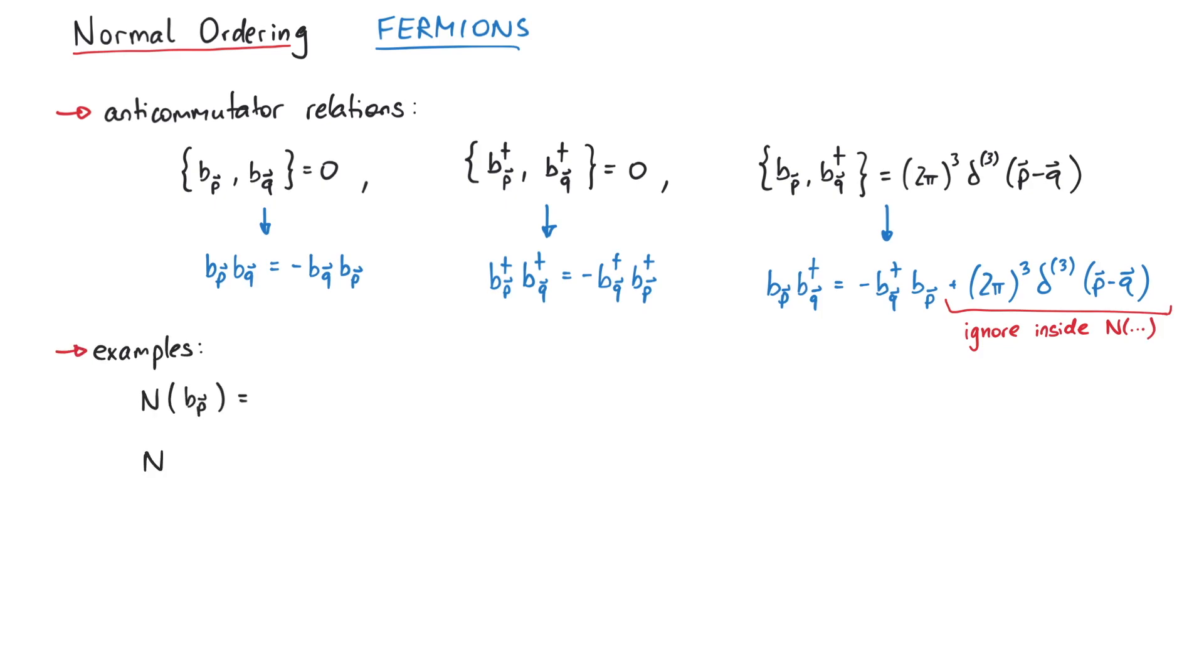Here are some examples for the normal order product of fermionic operators. You can try to solve them yourselves, and if you're finished, these are the solutions.